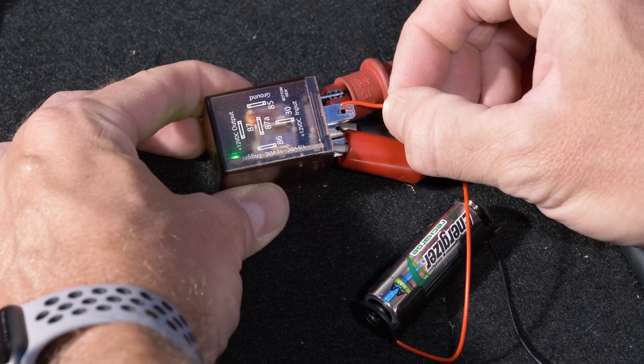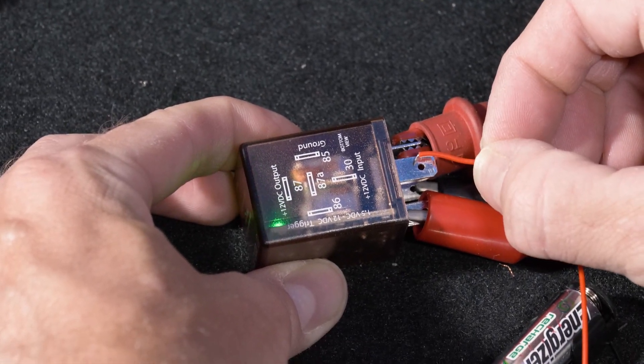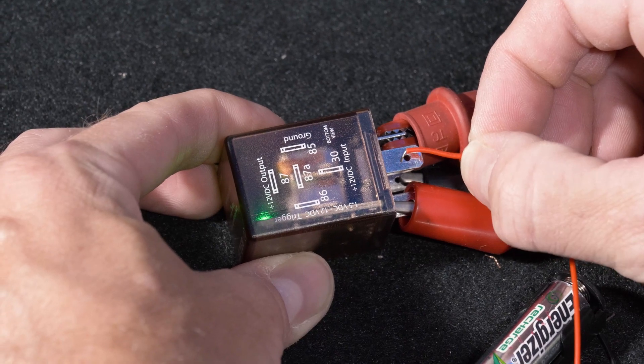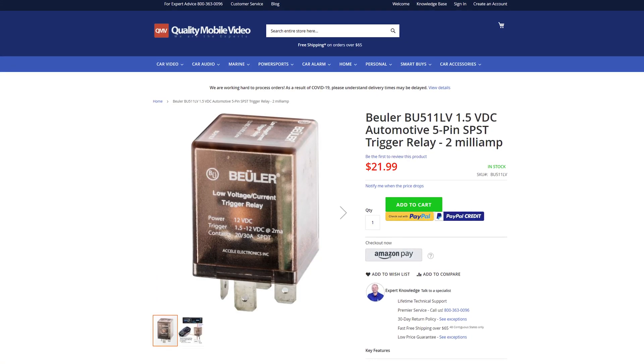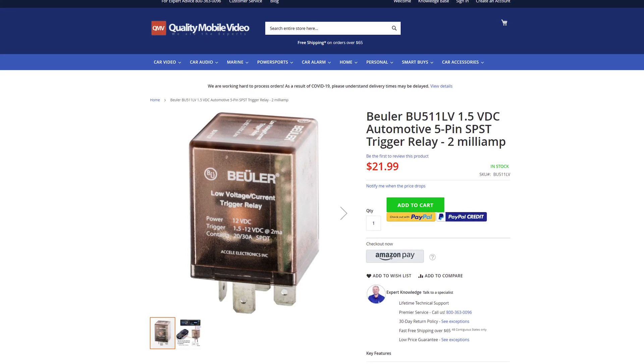This relay is designed to allow you to switch 12 volts with a voltage that's less than 12. Meaning if you have, let's say in common and newer vehicles, a 1, 2, 3, 4, 5, or 6 volt signal, but you need that to switch 12 volts, this is the relay for you.